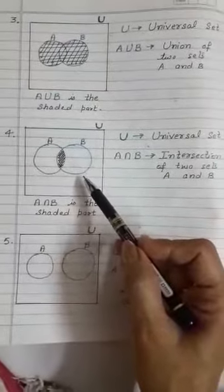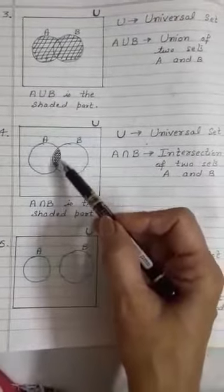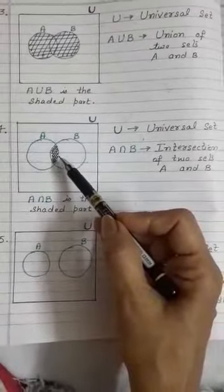And here it is A intersection B. What's the meaning of A intersection B? When we take common part of A and B, that is called A intersection B—that is the shaded part.